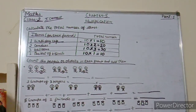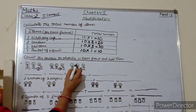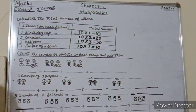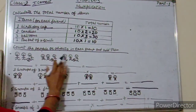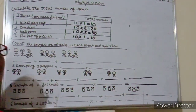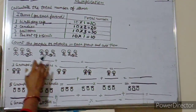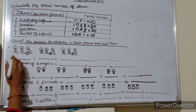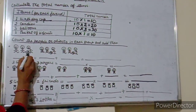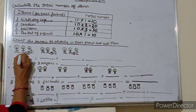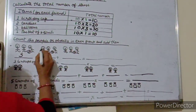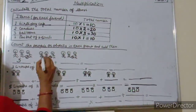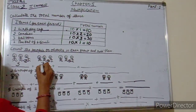Now students, count the people or objects in each group and add them. How many people are there, and how many groups are there? Count the people in each group: 1, 2, 3 — so we write 3. Again 1, 2, 3 — so here also 3 people. Again 1, 2, 3 — so here we also write 3.